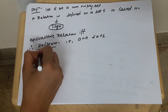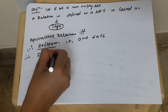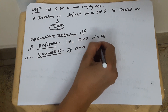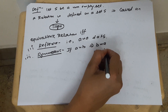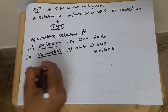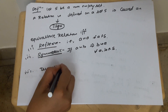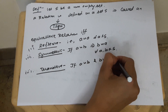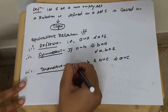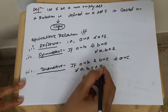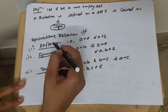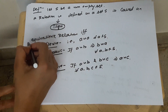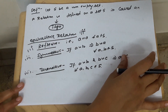Second condition is symmetric: if A is related to B, then B should also be related to A, for all A, B belonging to S. Third condition is transitive: if A is related to B and B is related to C, then A should be related to C, for all A, B, C belonging to S. If all these conditions are satisfied — reflexive, symmetric, and transitive — for all elements of S, then such a relation is called an equivalence relation.